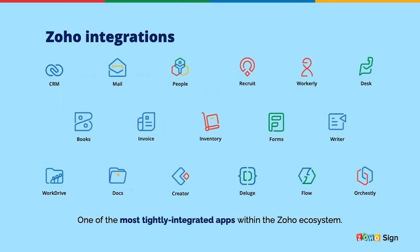Coming to integrations within the Zoho ecosystem, Zoho Sign is one of the most tightly integrated apps with over 15 different integrations available. The popular ones include CRM, Zoho Mail, Zoho People, Zoho Desk, Zoho Books, Zoho Finance (which includes Books, Invoice, and Inventory), Zoho Forms, and Zoho Writer — which have workflows to get data in and documents sent out quickly. It also integrates with Deluge for custom functions, and customizable applications such as Zoho Creator, Zoho Flow, and Zoho Orcastle.